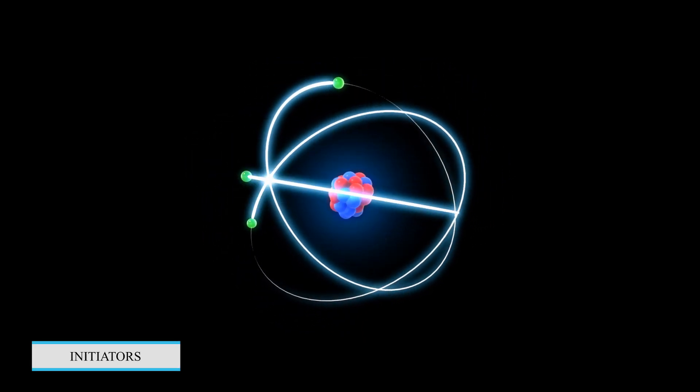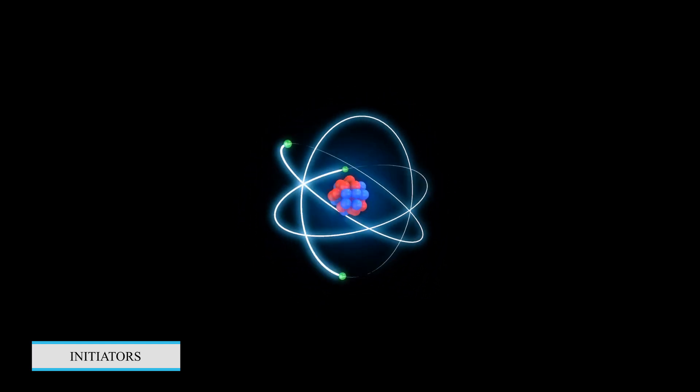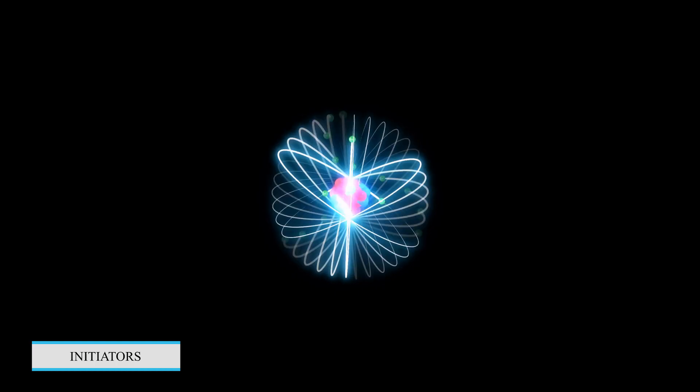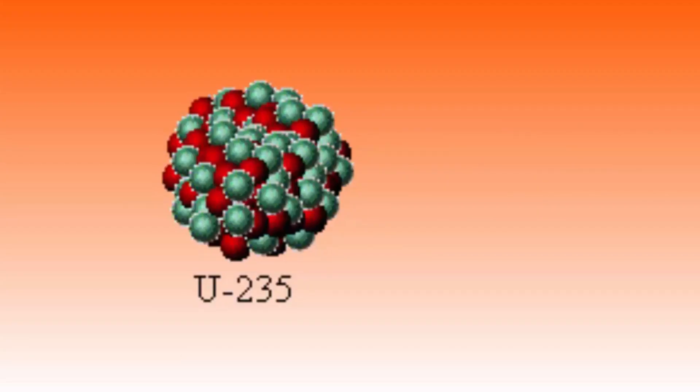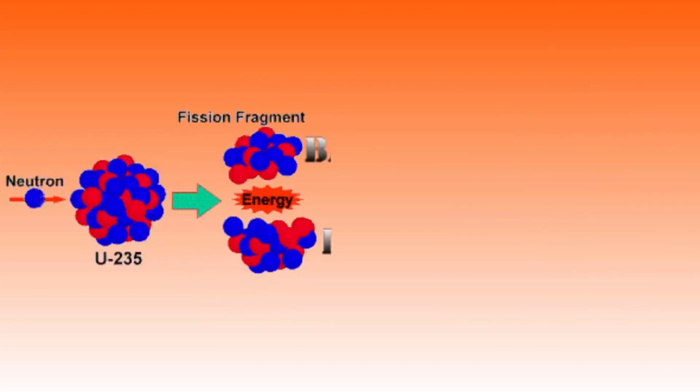Three, initiators. Initiators are small quantities of radioactive materials that produce a burst of neutrons at the moment of detonation. These neutrons initiate the chain reaction by bombarding the fissile material, causing it to start the nuclear fission process.